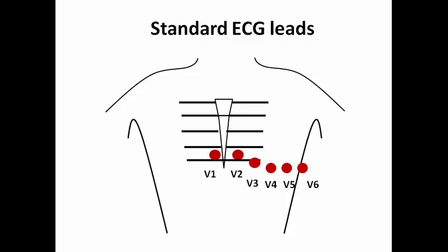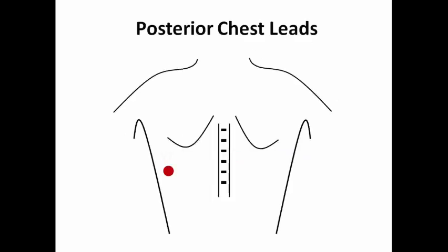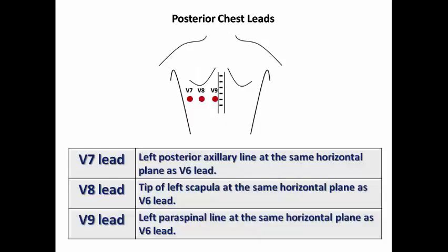We know the anatomical positions for the standard precordial leads. For the posterior ECG leads, we position the patient so we can place leads on the back. V7 is at the left posterior axillary line at the same horizontal plane as V6 — the 5th intercostal space. V8 is toward the tip of the left scapula at the same horizontal plane. V9 is at the left paravertebral line. These posterior ECG leads are placed on the back of the patient to record ECG changes of posterior STEMI.